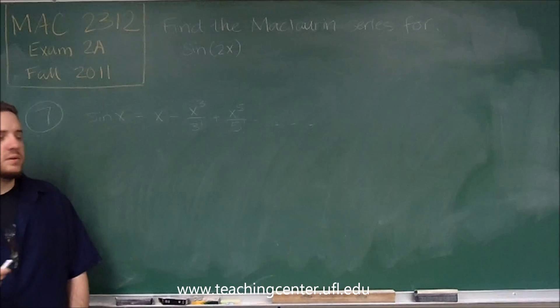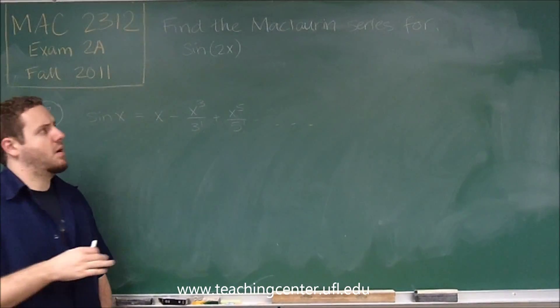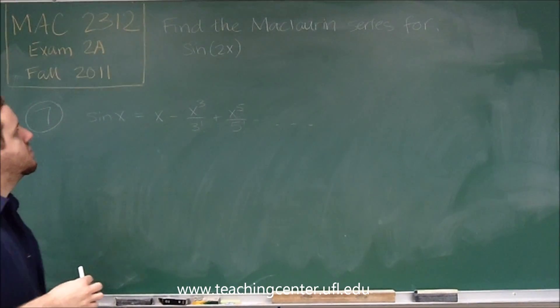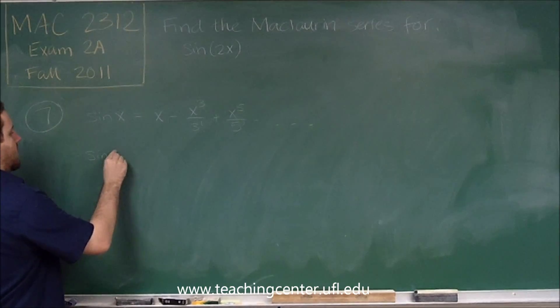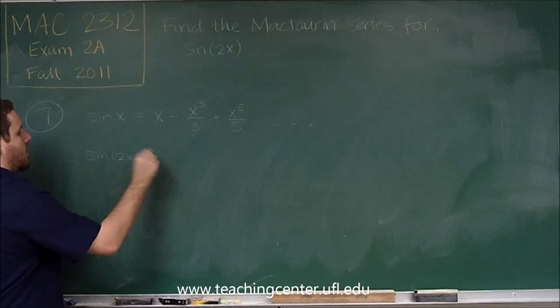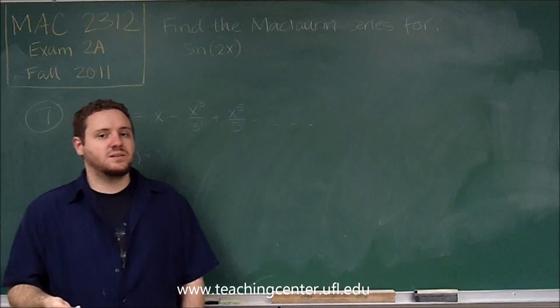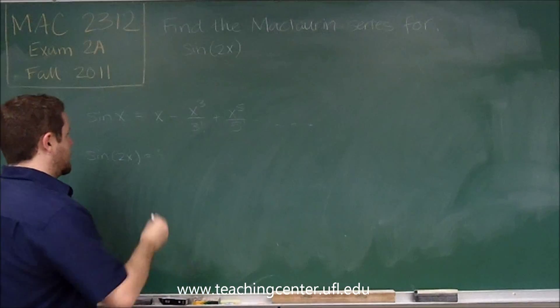Now you could write that out in series form also, but you don't need to for this problem. So we want sine 2x instead. So what does that mean? Everywhere there's an x, we're going to be putting a 2x instead.